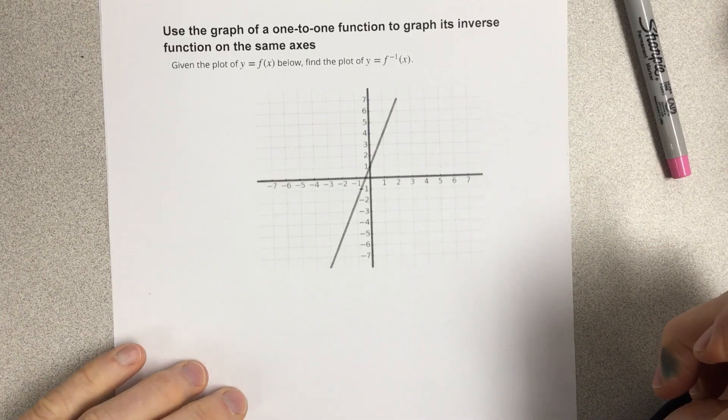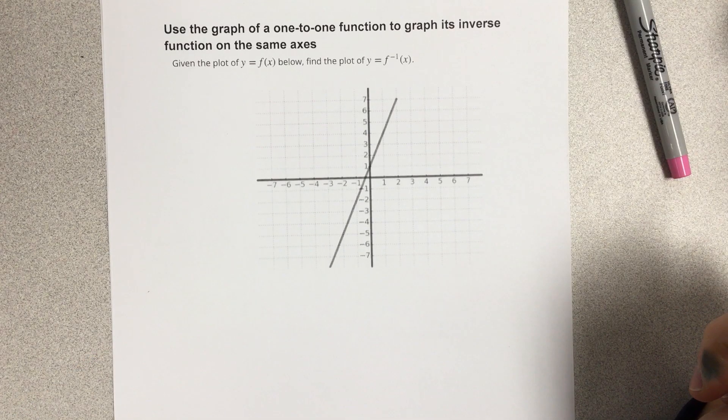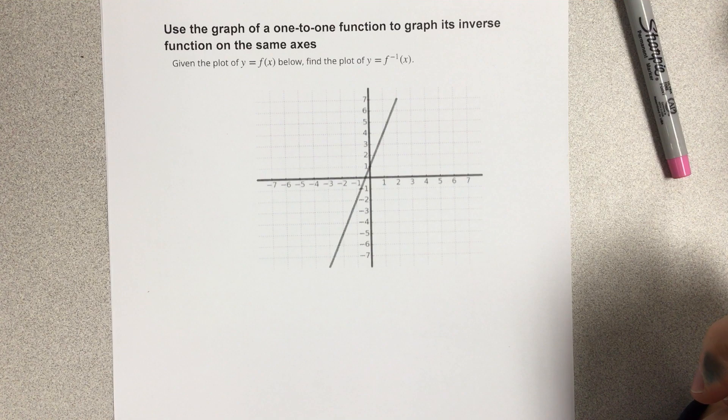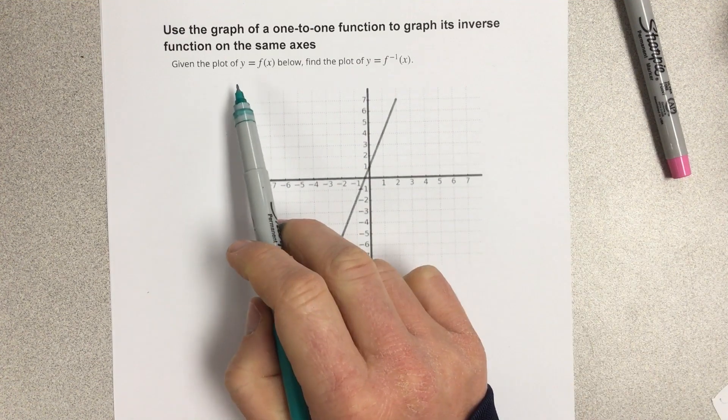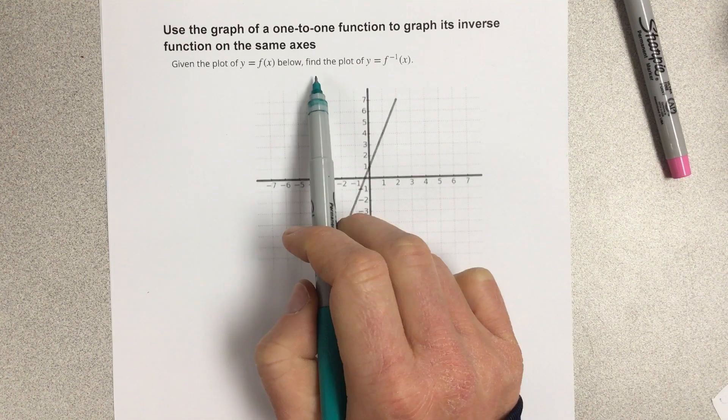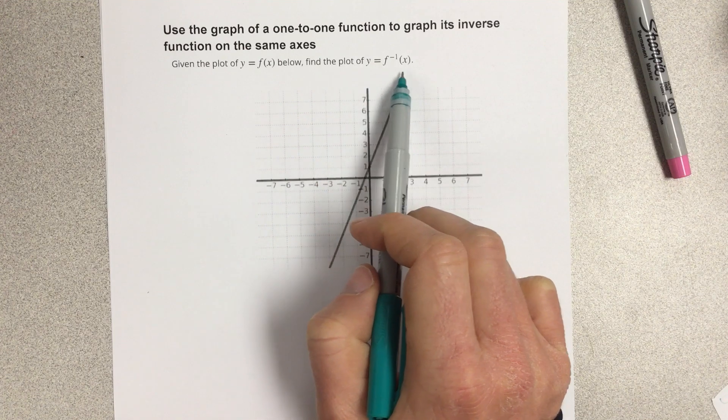In this video, they say use the graph of a one-to-one function to graph its inverse function on the same axis. Given the plot of y equals f of x below, find the plot of y equals f inverse of x.